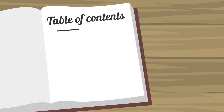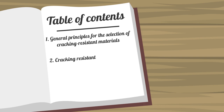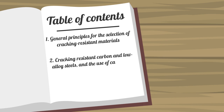It consists of three parts. Part 1 refers to general principles for the selection of cracking resistant materials. Part 2 refers to cracking resistant carbon and low alloy steels and the use of cast irons. And Part 3 refers to cracking resistant CRAs and other alloys.